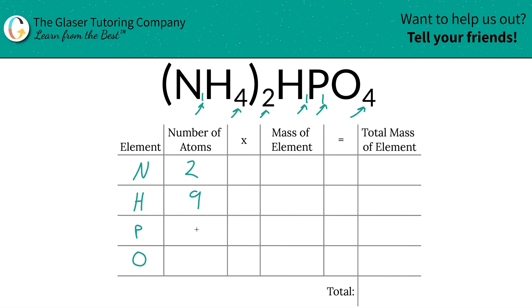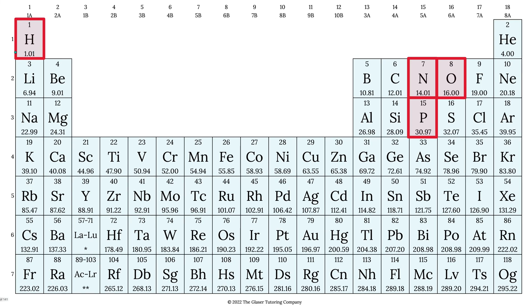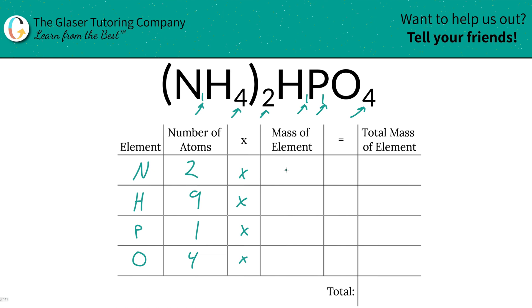You also therefore have one phosphorus, that one's nice and easy, and you have four oxygen. Then we're going to take the number of atoms of each and multiply it by the mass of the element. These masses are found on the periodic table. Here they are. Hydrogen is 1.01, nitrogen is 14.01, oxygen is 16, and phosphorus is going to be 30.97.